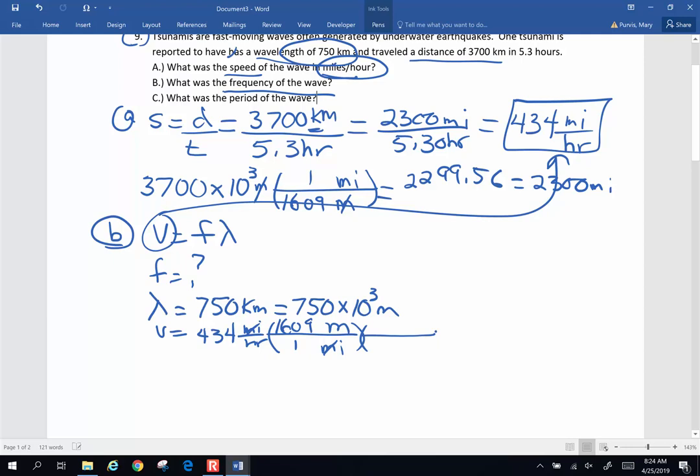1,609 meters in one mile. Get rid of hours, go back to seconds. 3,600 seconds in an hour. And I'm going to grab my calculator and see what I get. 434 times 1,609 divided by 3,600, and I got 194 meters per second as the velocity of this wave. That makes sense.